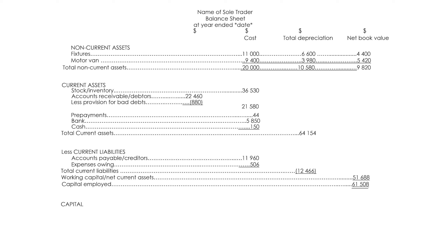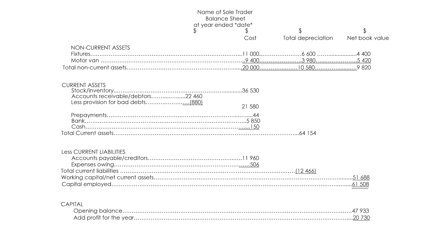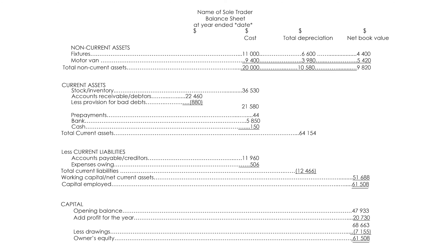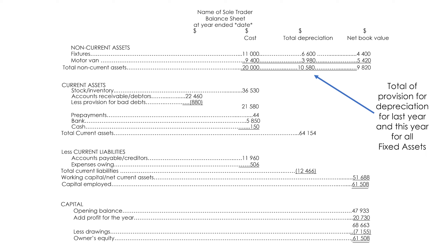Capital employed. Capital: opening balance, add profit for the year, less drawings. Owner's equity.